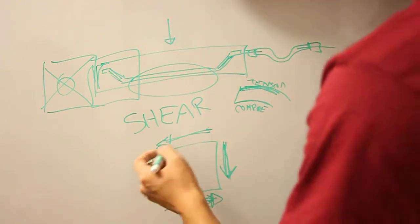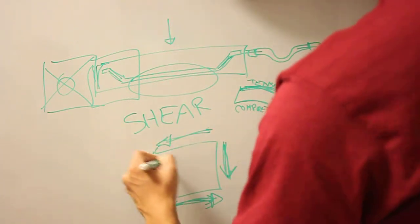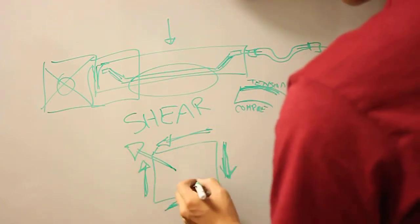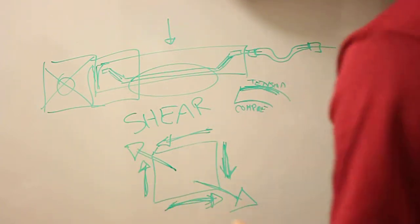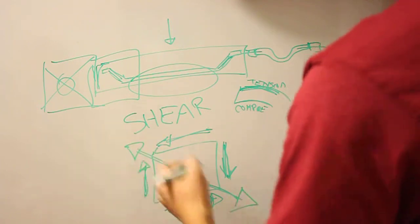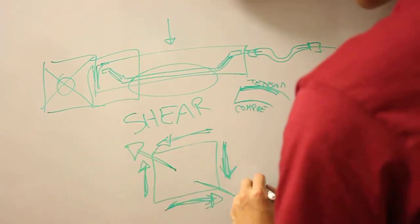So if you add these together, it looks like these two add to one 45 degrees this way, and these two add to one 45 degrees this way. And that is tension, essentially, on the outsides here.